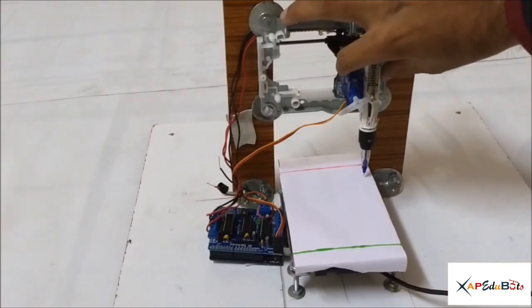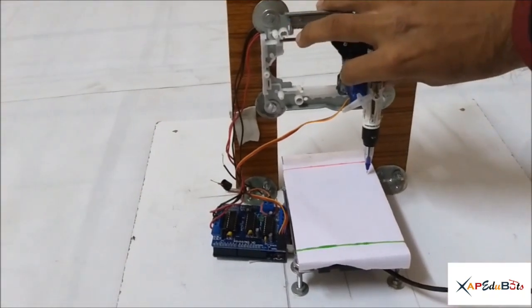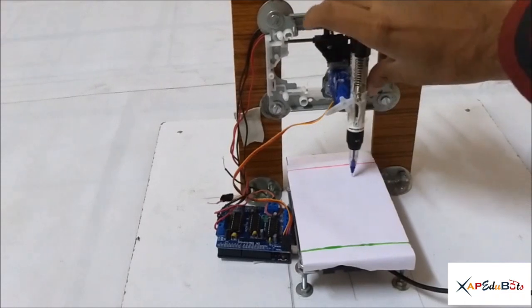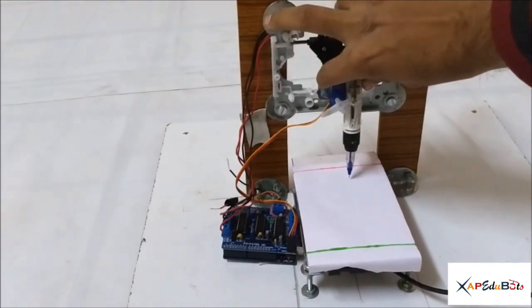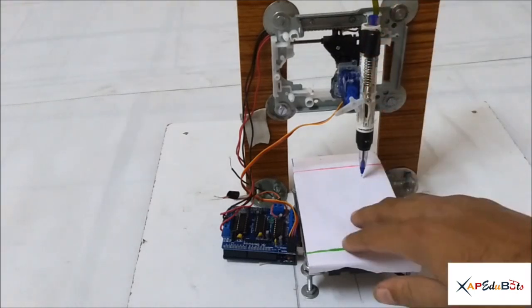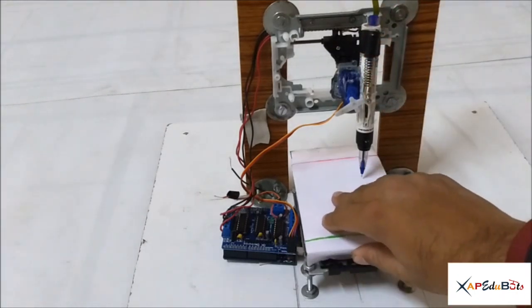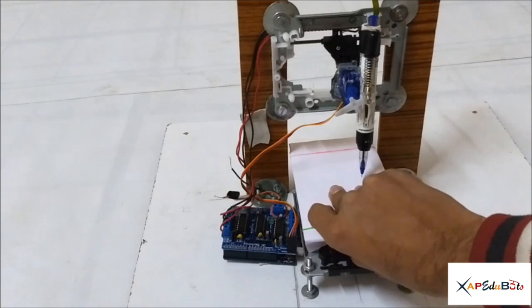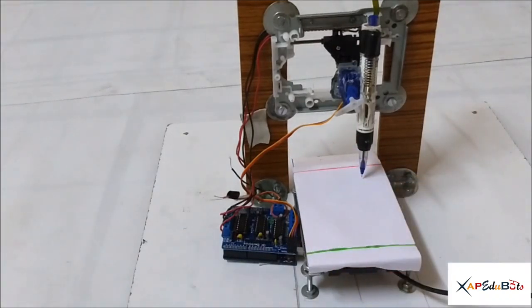So this drive controls this motion of this pen. That is X direction and another one controls Y direction. So basically there are two CD drives to control X and Y direction.